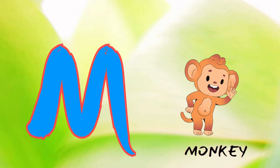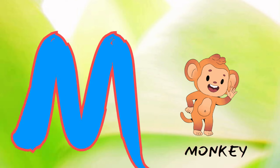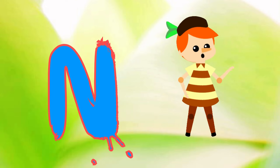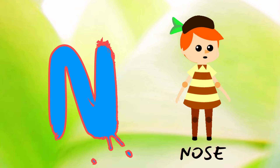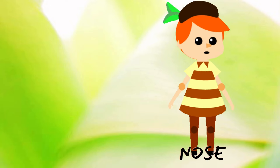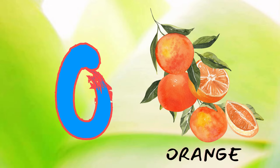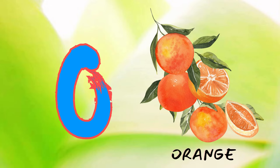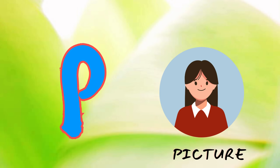M is for Monkey. N is for Nose. O is for Orange. P is for Picture.